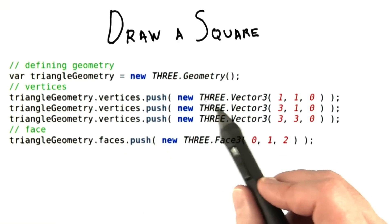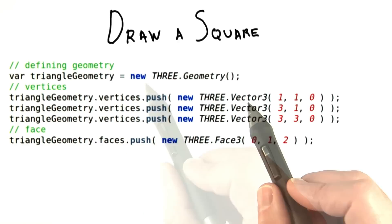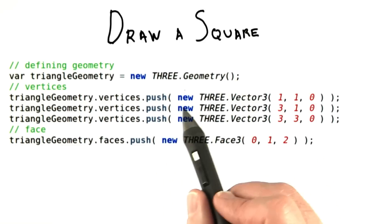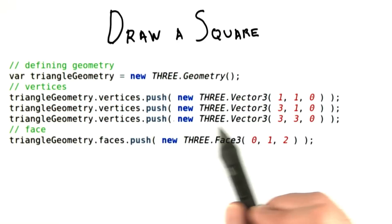Vertices are the corners of a polygon, usually a triangle. Once we create our geometry object, we add vertices by pushing them onto the array.